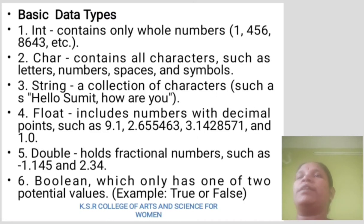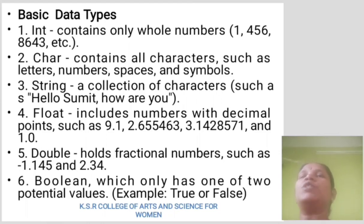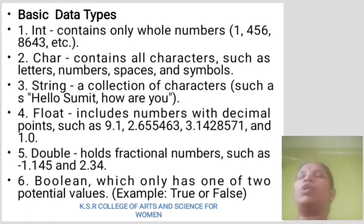Basic data types. Integer: contains only whole numbers. Character: contains all characters such as letters, numbers, spaces, and symbols. String: a collection of characters such as 'hello', 'summit', 'how are you'. Float: includes numbers with decimal points such as 9.1, 2.655, 463, etc. Double: whole fractional numbers such as minus 1.145 and 2.34. Boolean: which only has one of two potential values, example true or false.